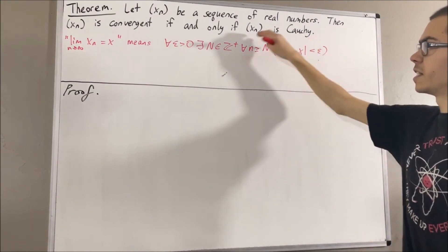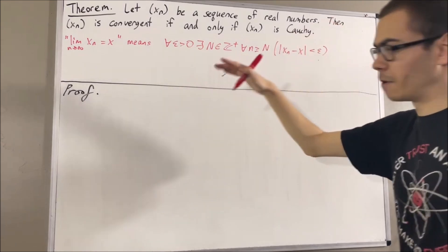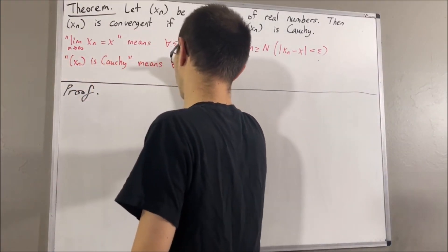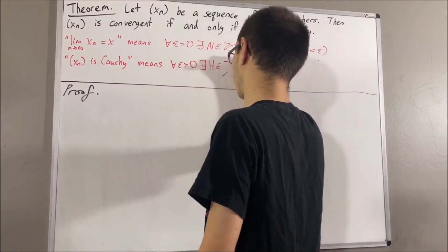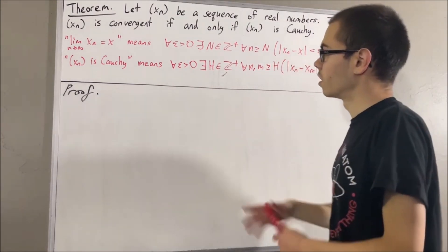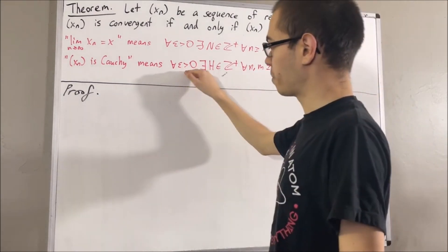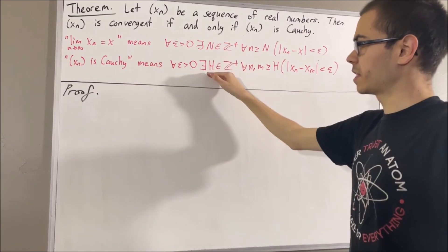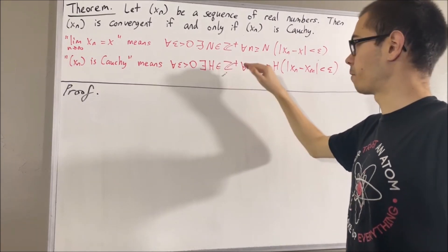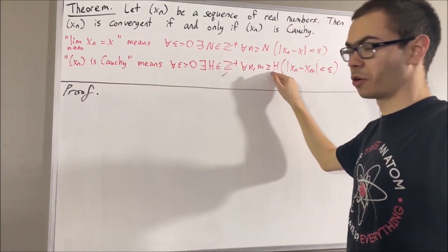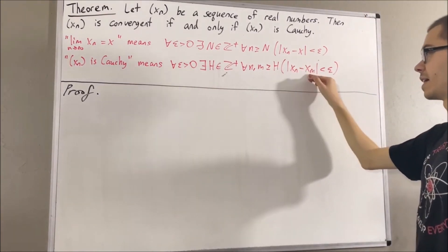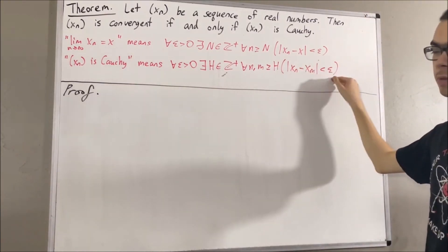And to say that xn is Cauchy means the following: for every epsilon greater than zero, there exists a positive integer H, such that for all n and m greater than or equal to H, the absolute value of xn minus xm is less than epsilon.